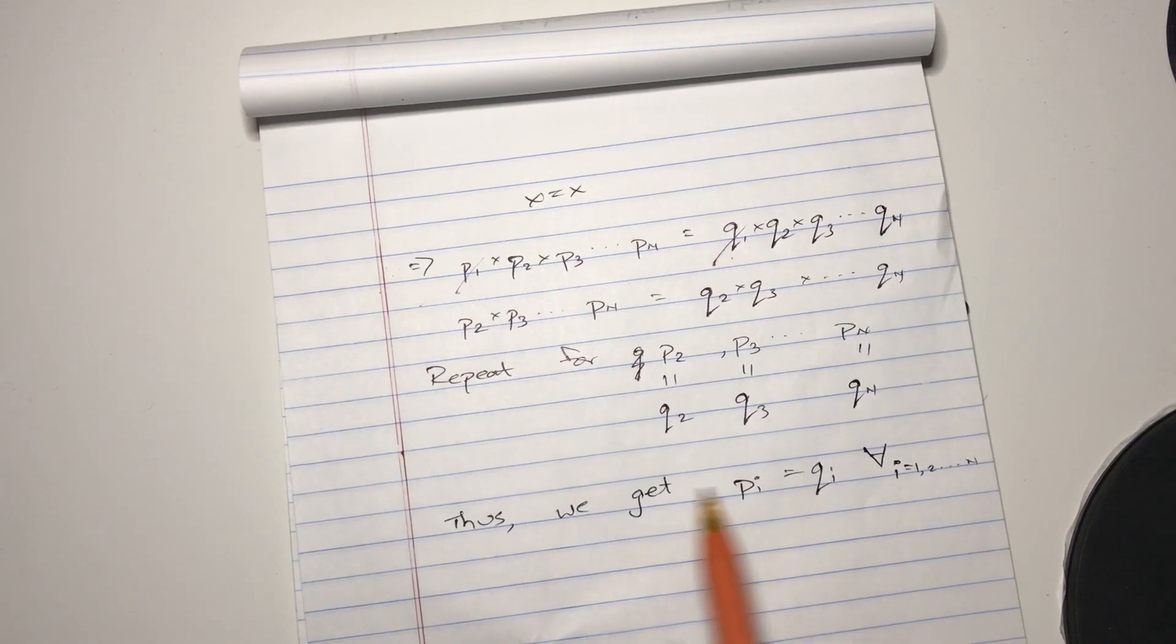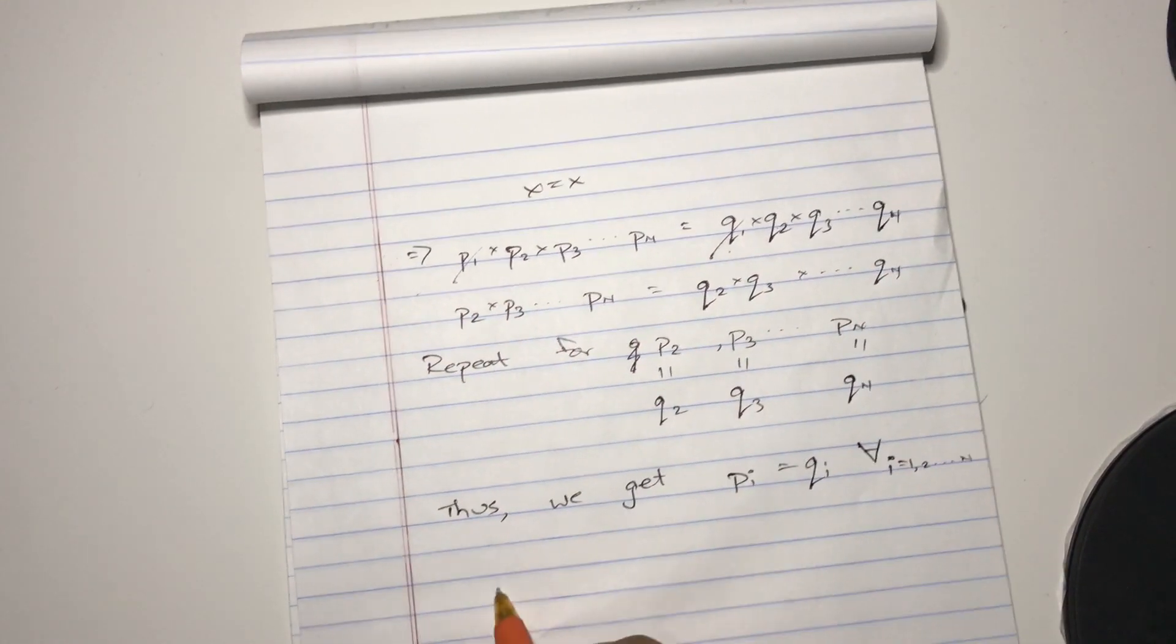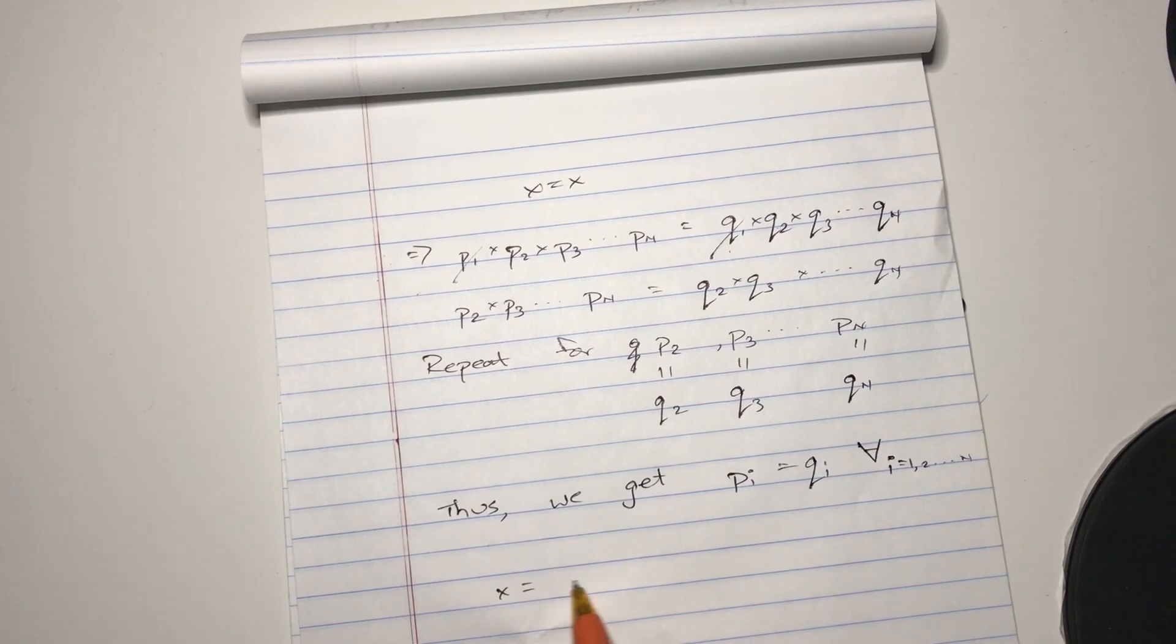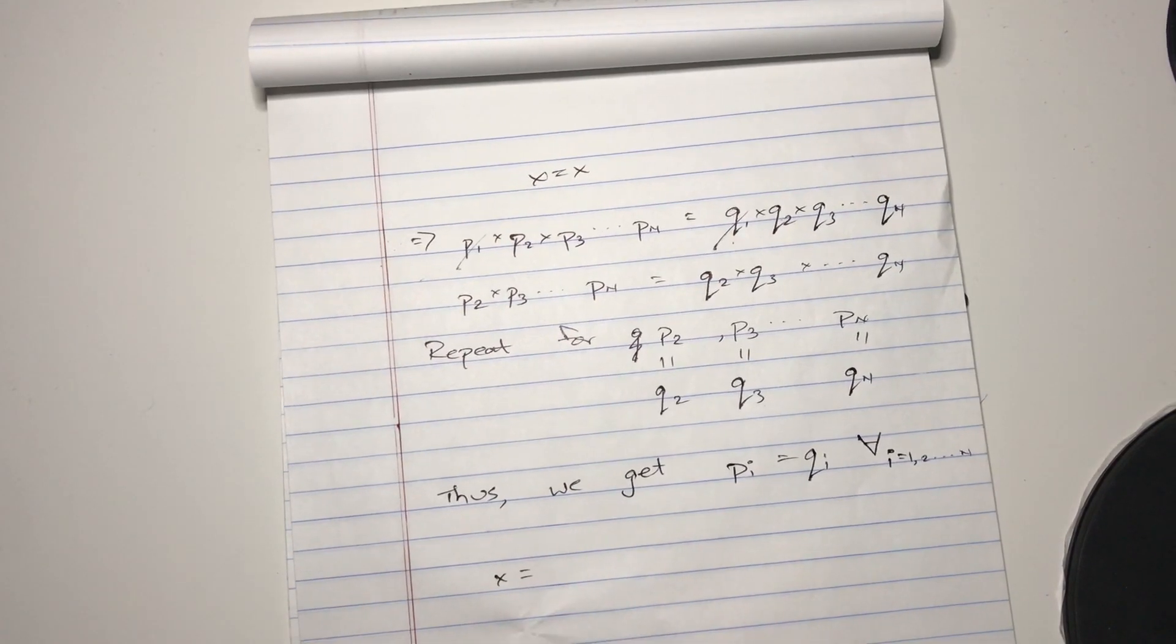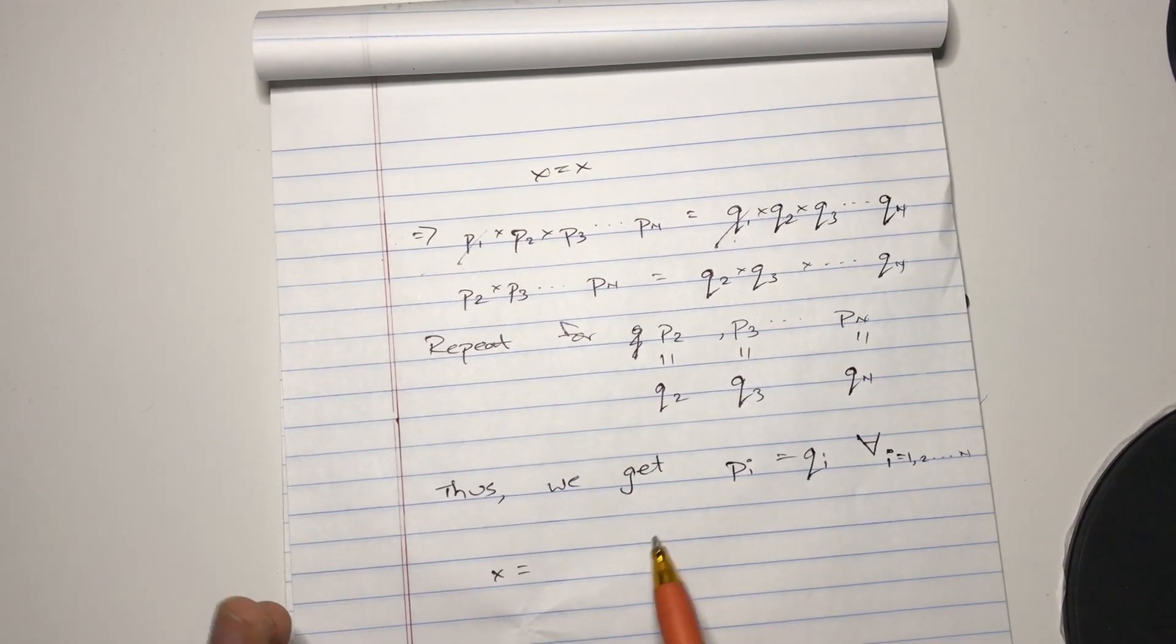So all these numbers are equal. Therefore, x can only be expressed as this p1 all the way to pn. It can only be expressed in a unique way with only unique factors.